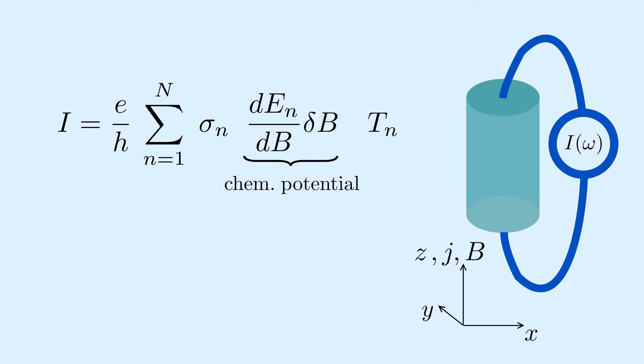In the ballistic case, we find the surface current has the remarkable universal value e over h squared times the cross-section of the wire times the inversion breaking strain times the amplitude of the oscillating magnetic field. Up to a minus sign, this is precisely the same value as the conventional chiral magnetic effect.